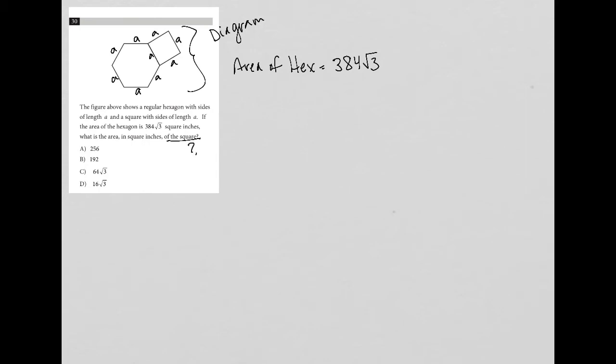Anytime I am given information like this, the area of something, the volume of something, I look to replace the words that I've written down with the actual formula. So the area of a hexagon, the area of any polygon is one half the perimeter times the apothem.